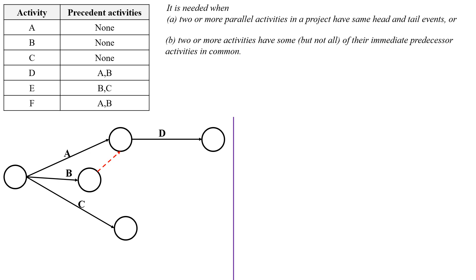Next activity E. Activity E will start immediately after completion of activities B and C. So draw the activity E like this. But this represents the activity E will start after completion of activity C only.